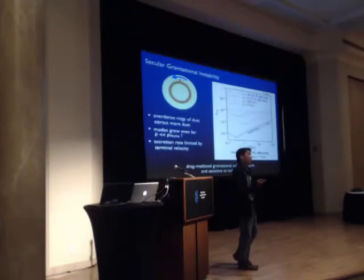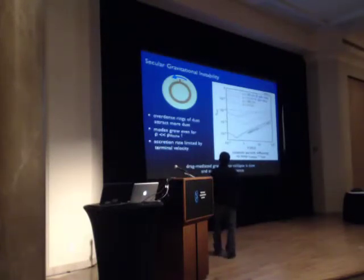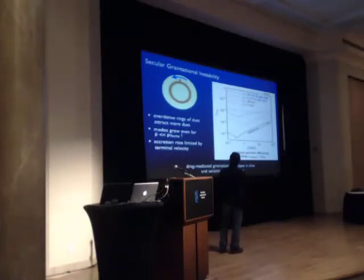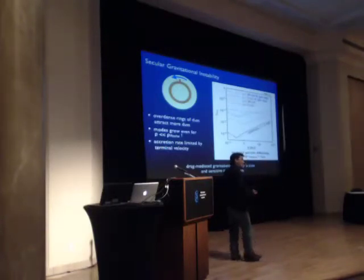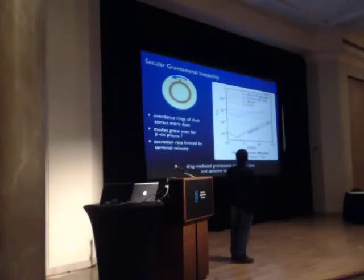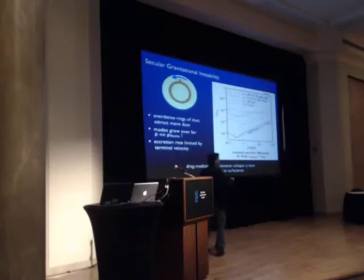In a recent paper by Andrew Youdin, plotting for millimeter-sized particles the maximum alpha turbulence parameters — the maximum particle diffusivities that the system can tolerate for collapse to happen — these maximum tolerable alphas are not very large: 10⁻⁷ at a few AU. So the concern remains that some turbulence could disrupt the whole process.